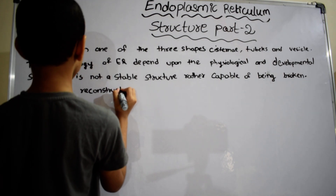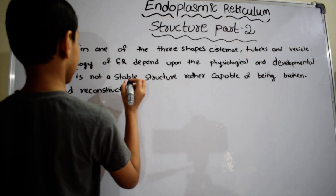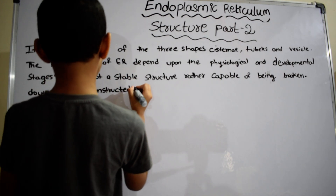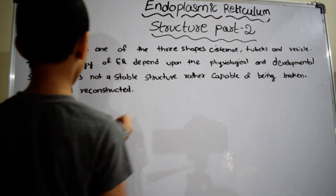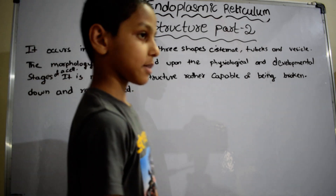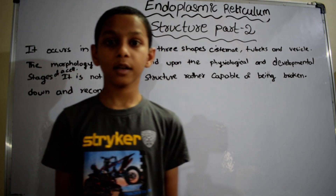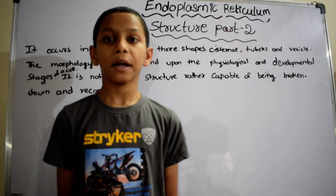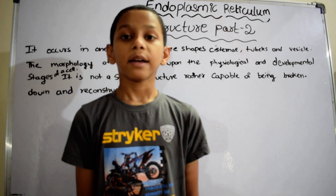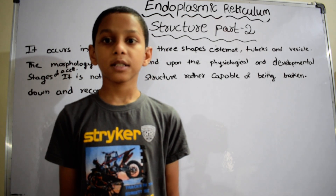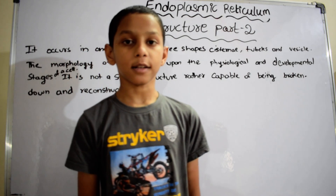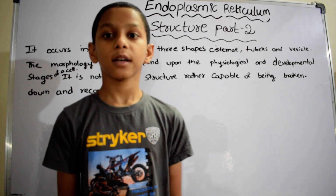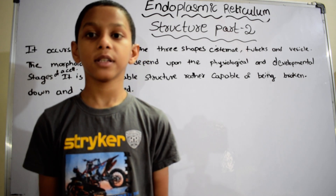The cisternae are large, flattened, parallel, and sac-like structures that are interconnected to each other.